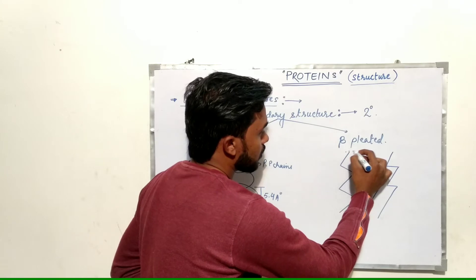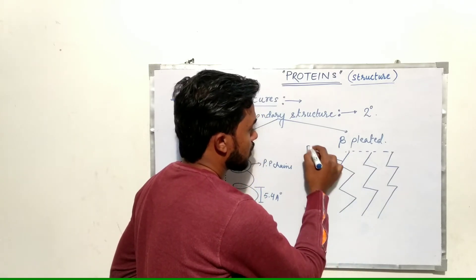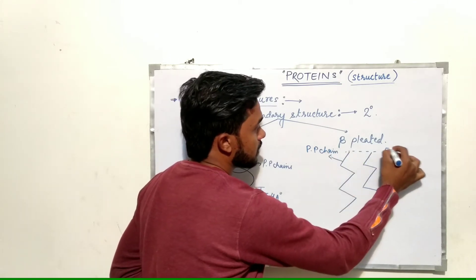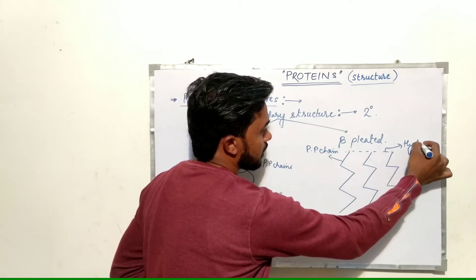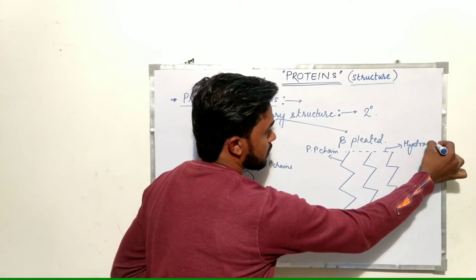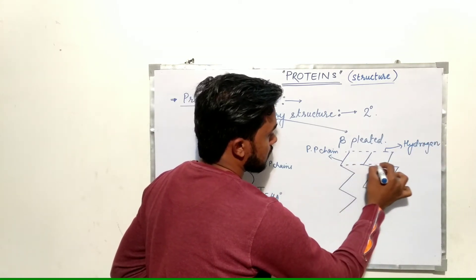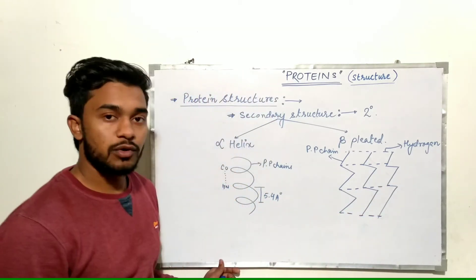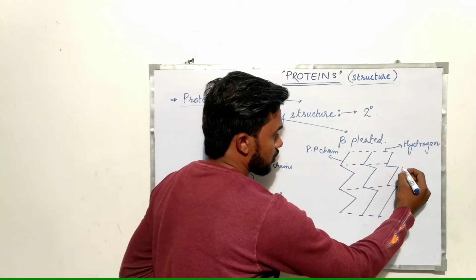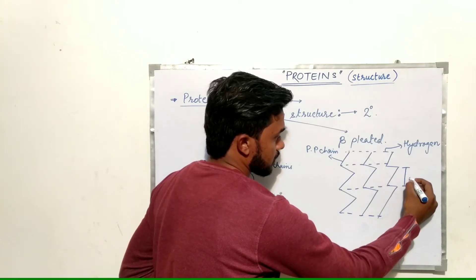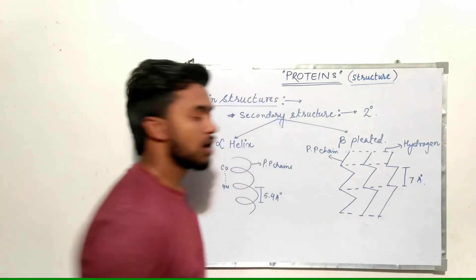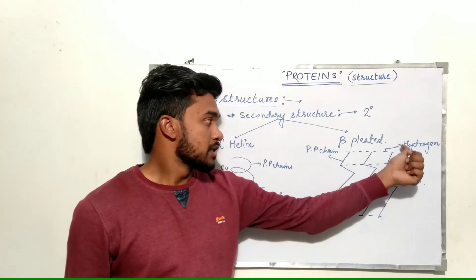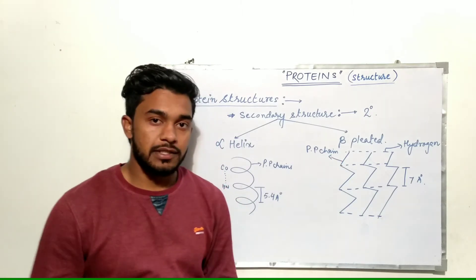In the beta-pleated sheet structure, the polypeptide chains are held together by hydrogen bonding. There is also a pitch of seven angstroms in beta-pleated structures. This is how beta-pleated structures are found in proteins.